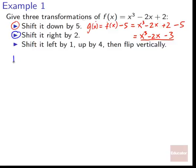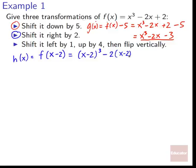Second transformation: shift right by 2. We use f(x − 2), substituting x − 2 for x everywhere. So h(x) = (x − 2)³ − 2(x − 2) + 2. We could expand and simplify, but the key point is just how the substitution works.